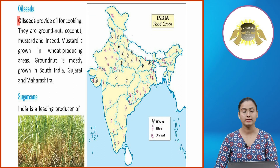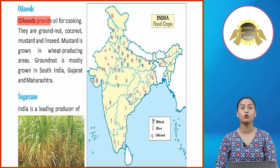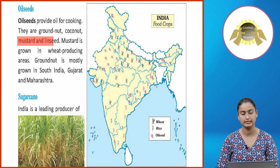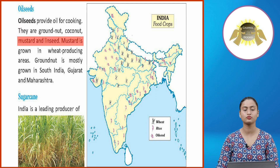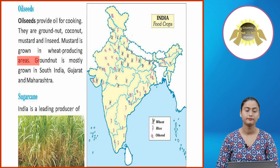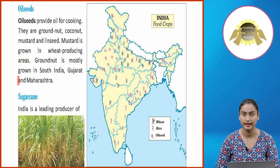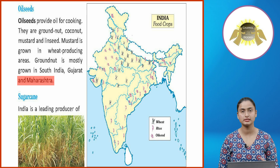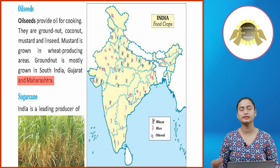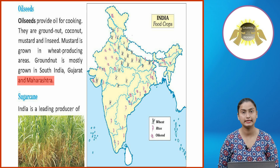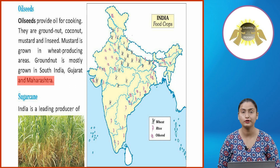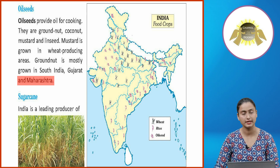Oil seeds provide oil for cooking. They include groundnut, coconut, mustard, and linseed. Mustard is grown in wheat-producing areas. Groundnut is mostly grown in South India, Gujarat and Maharashtra.